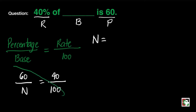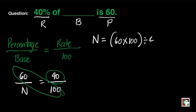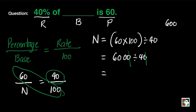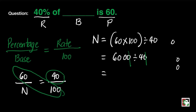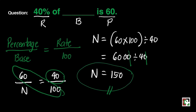To find N, just do cross multiplication. N is equal to 60 times 100 divided by 40. 60 times 100 is 6,000 divided by 40. We can cancel the two zeros; what's left is 600 divided by 4, and that gives us 150. So N equals 150, meaning 40% of 150 is equal to 60. Our final answer is 150.